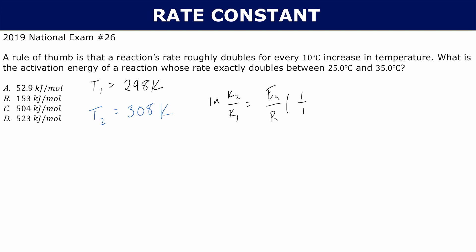You know T1, T2, and R because R is a constant. All you have to find is k2 over k1. We're told that the reaction's rate doubles for every 10 degrees Celsius increase, so the relationship k2 over k1 has to be 2.